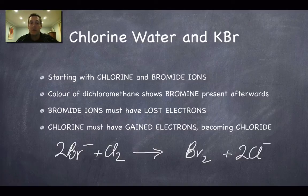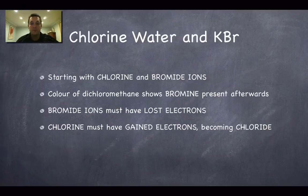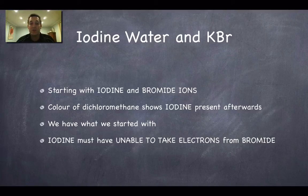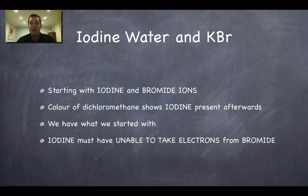When we added iodine water to potassium bromide, we started with iodine and bromide ions. The colour of the dichloromethane was pink at the end, showing that iodine is still present — but that's what we started with, so there was no reaction. Iodine couldn't take electrons from the bromide ions, meaning iodine is not a good enough oxidising agent to oxidise bromide. Therefore bromine must be a better oxidising agent than iodine.